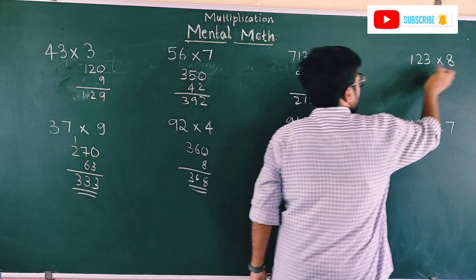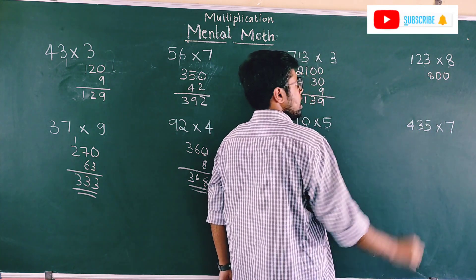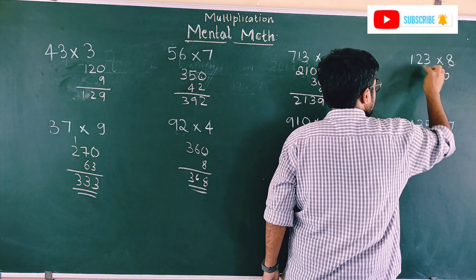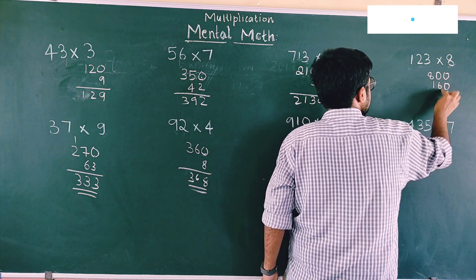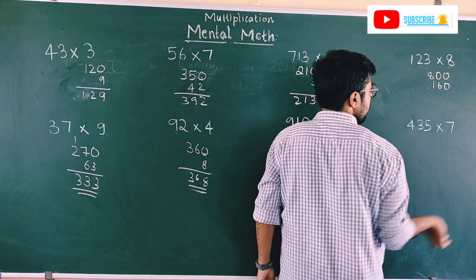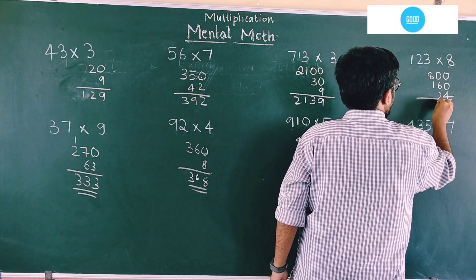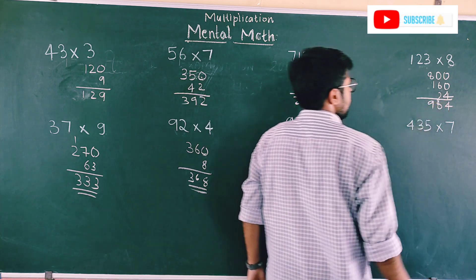Similarly here, 8 times 1 is 8. Put 2 zeros because there are 2 numbers after 1. Next, 2 times 8 is 16, and put 1 zero, 160. 16 and 1 zero because 3 is after 2. Next, 8 times 3 is 24. So just add everything: 984 would be the right answer.